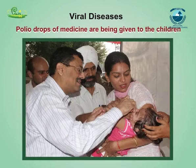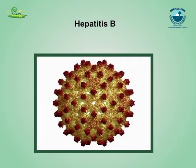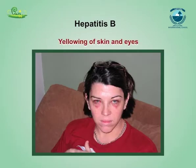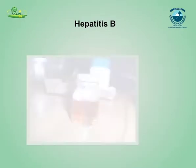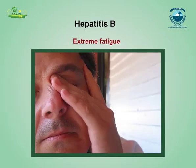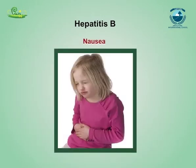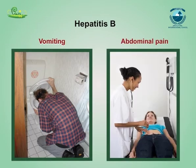Measles, chicken pox, and polio are viral diseases that spread through air. Their vaccination is usually given to children at an early age. Hepatitis B is a viral infection that attacks the liver. The virus is transmitted through contact with the blood or other body fluids of an infected person. Symptoms include yellowing of the skin and eyes, dark urine, extreme fatigue, nausea, vomiting, and abdominal pain.